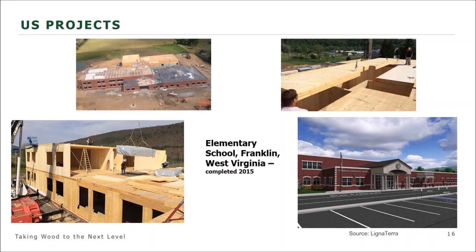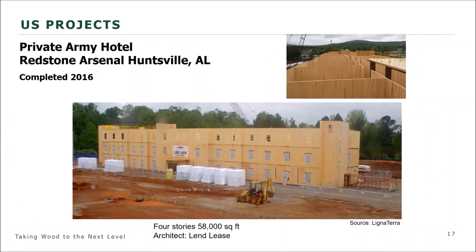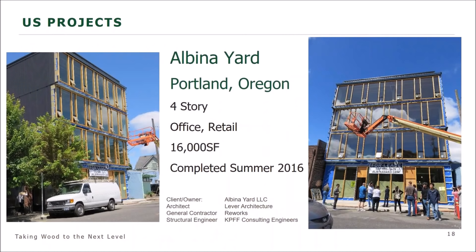Taking it from Canada to the U.S., here are some firsts: back in 2015, before it was even adopted in the 2015 IBC, the first elementary school using all cross-laminated timber was built in Franklin, West Virginia. Then in 2016, the first CLT hotel was completed at Redstone Arsenal, Huntsville, Alabama by Lend-Lease. They recently completed another hotel in upstate New York — a similar design but a little larger.